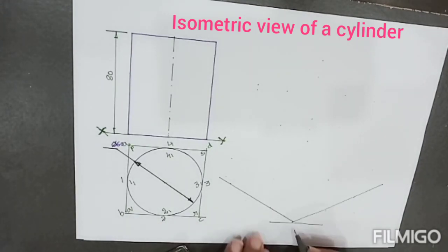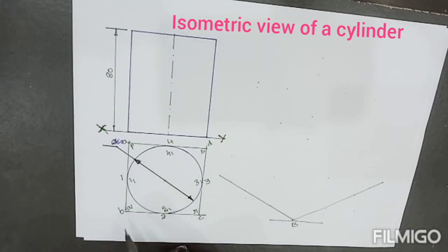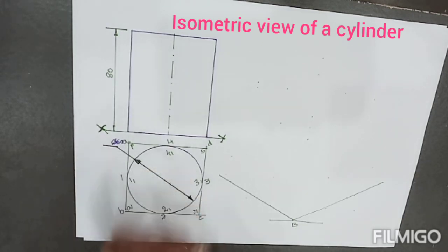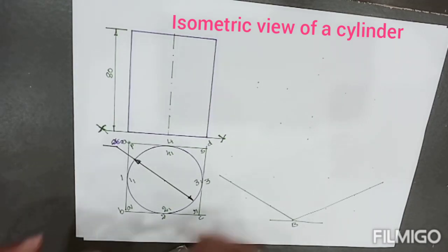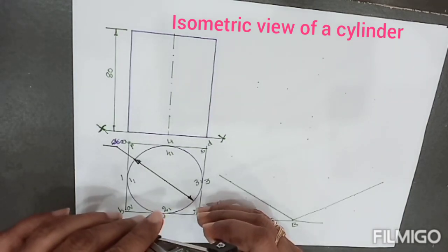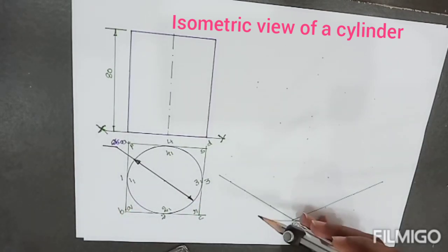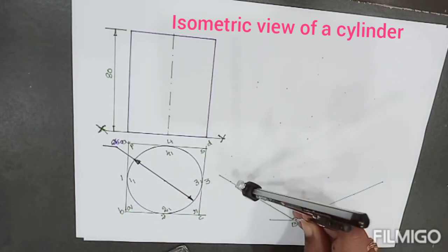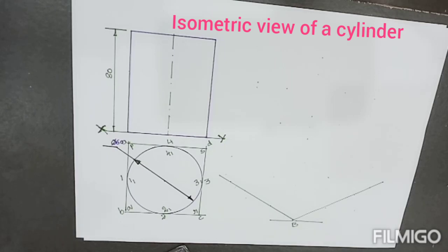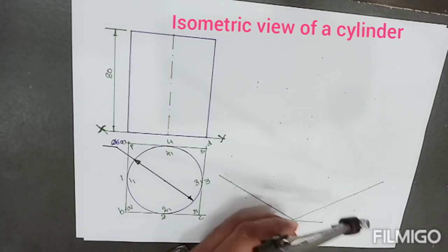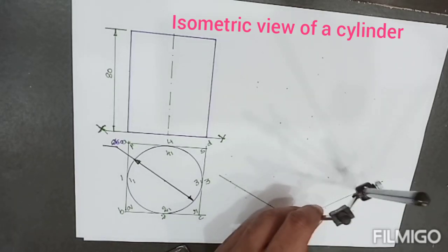Point B is resting on the ground. Line BC makes an angle of 30 degrees and line BA also makes an angle of 30 degrees. Using a compass, with BC as the radius and B as the center, draw an arc. Similarly, draw an arc on the other side as well.